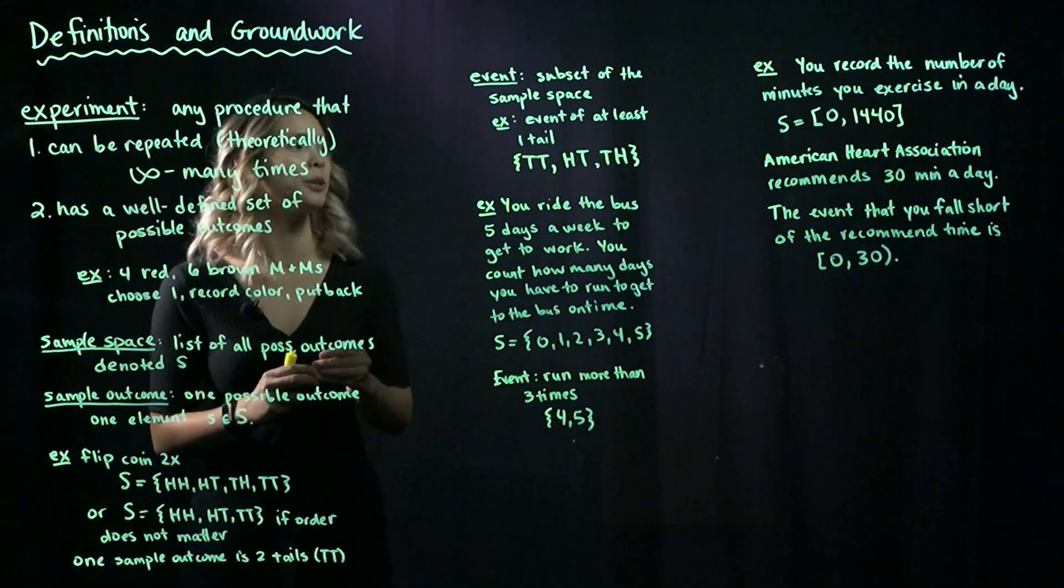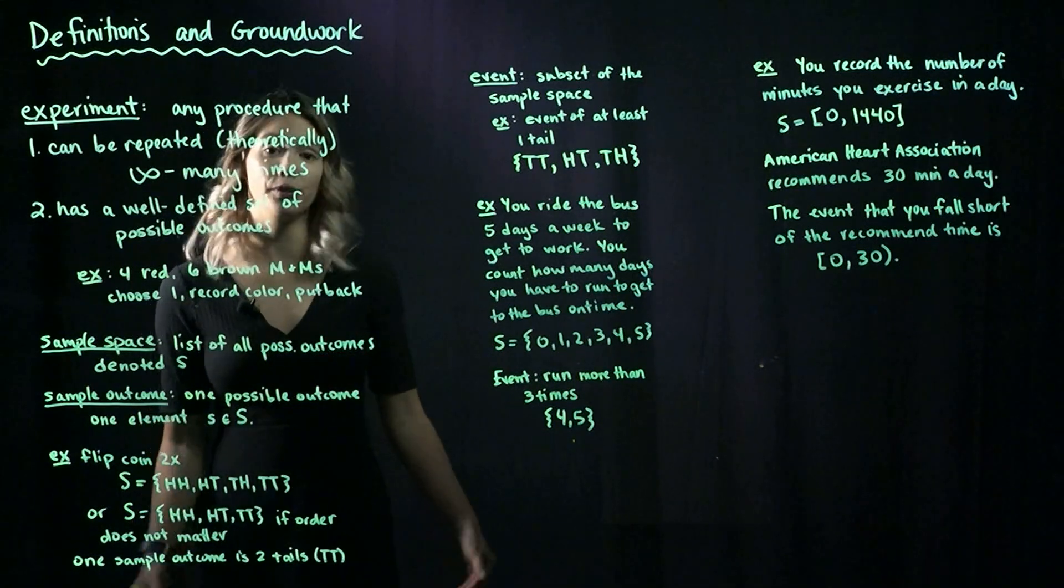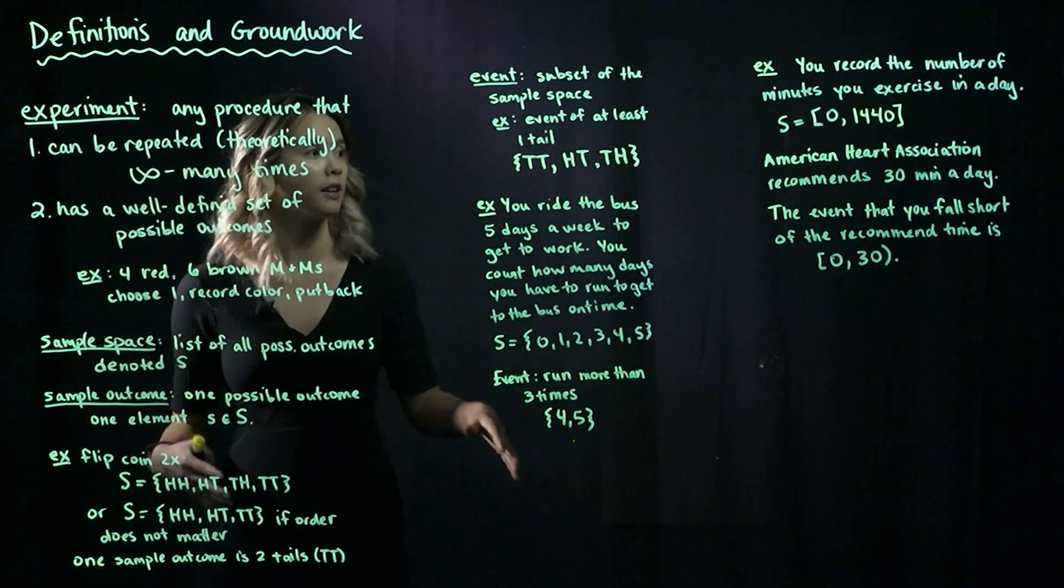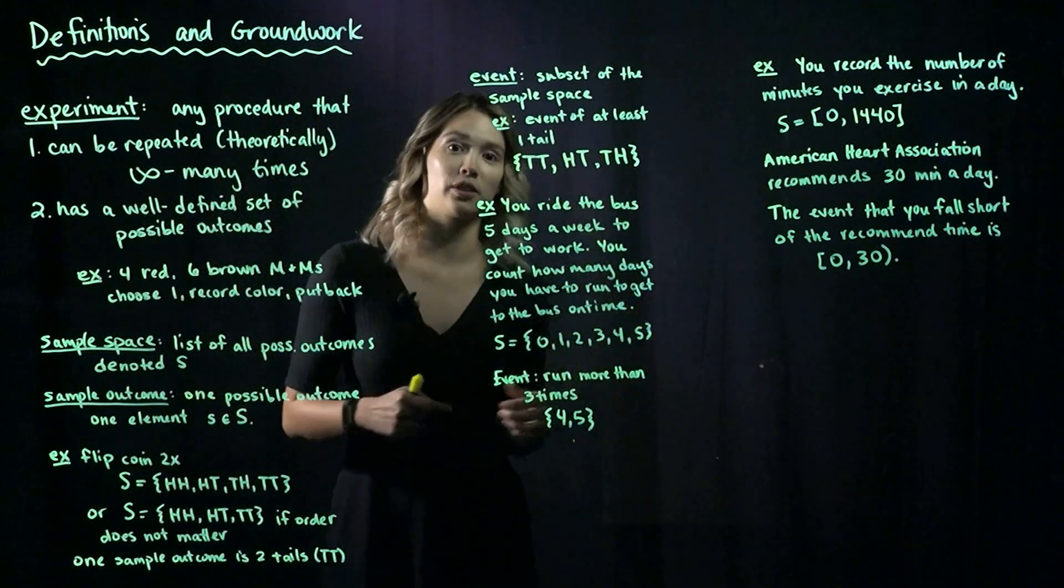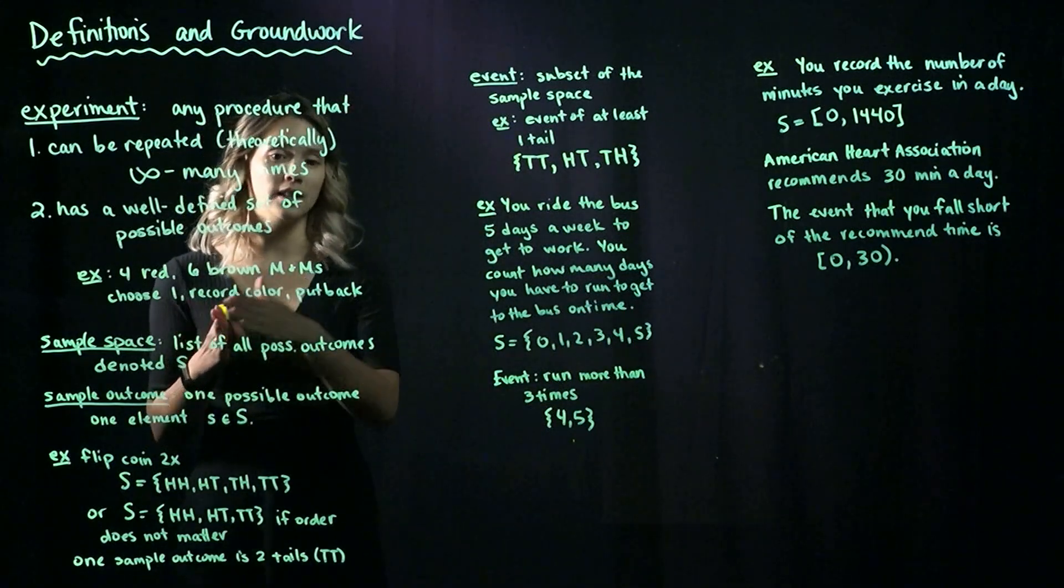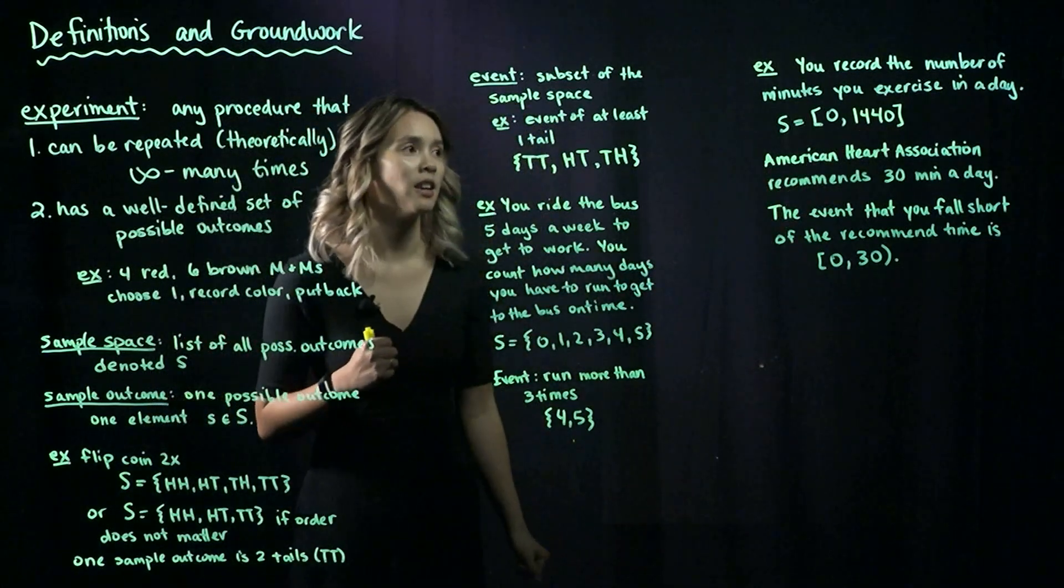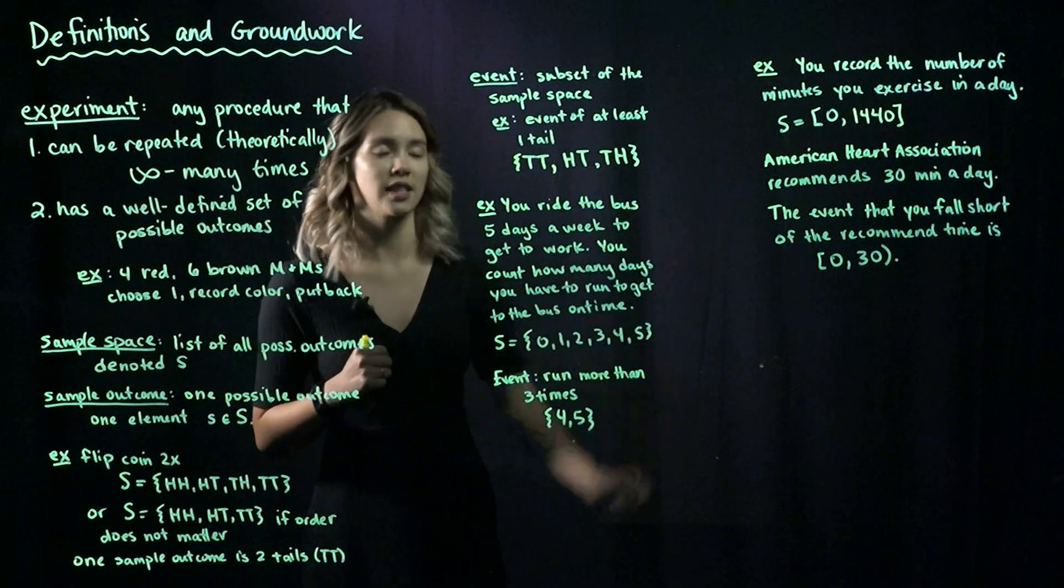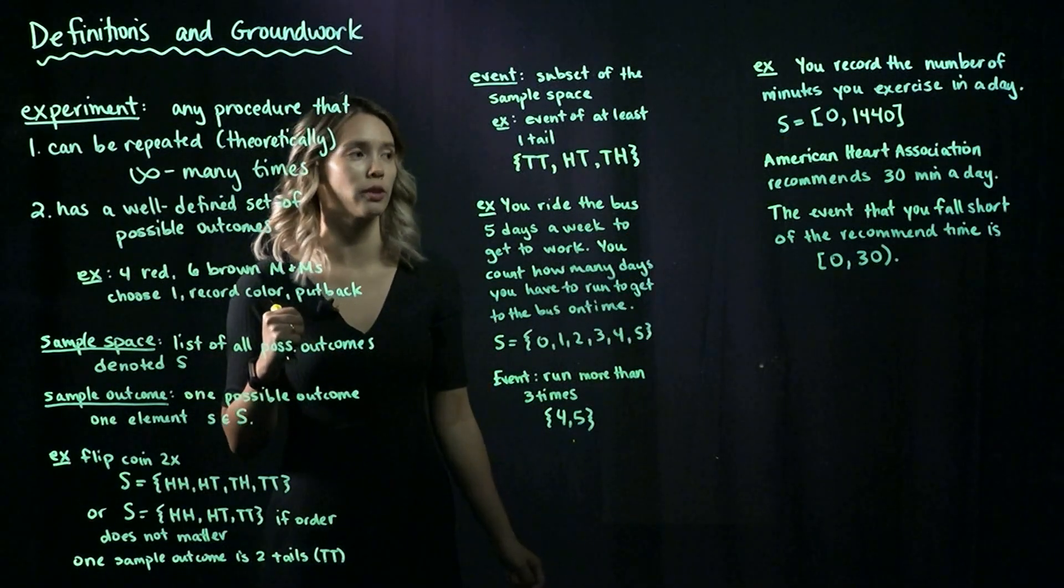One more example. You record the number of minutes that you exercise in a day. So if you don't exercise at all in a day, you would be exercising zero minutes. And if somehow you are exercising every single minute of the day, then you would have 60 times 24 equals 1440 minutes of exercise in a day. So this is our sample space: zero minutes to 1440 minutes.